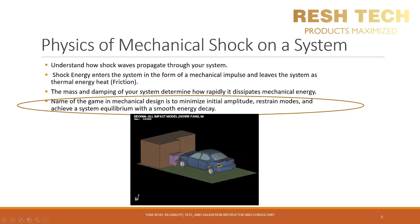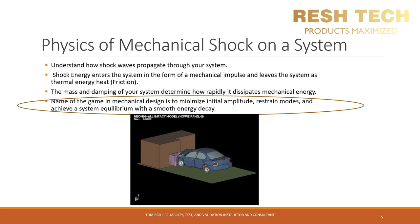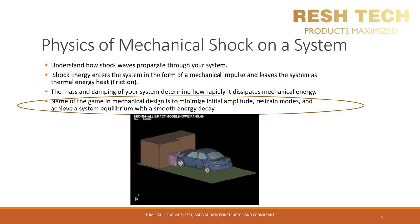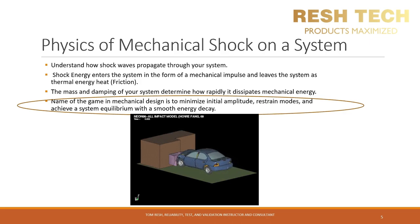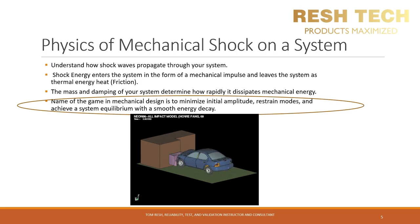A great example of creating a desired mechanical energy propagation path is in the design of an automotive vehicle. In this crash simulation, the vehicle body crumbles, which creates friction and helps remove energy from the system as heat. Also notice that the driver's door pushes out, providing a visual example of the majority of the wave propagation moving through the driver's side door instead of through the person driving the vehicle.